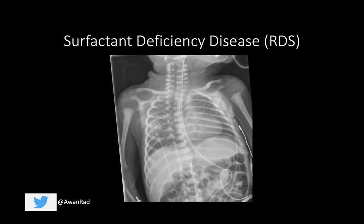If it's known that someone is going to have RDS, we give the mother steroids, because steroids help with the synthesis of surfactant, and then give the child exogenous surfactant after birth. On chest x-ray, you're going to see low lung volumes — though lung volume assessment is not always super helpful — and the key finding is diffuse granular opacities. The lung parenchyma looks very hazy. That's the key finding you're looking for: a diffuse reticular granular opacity within the lungs for respiratory distress syndrome.